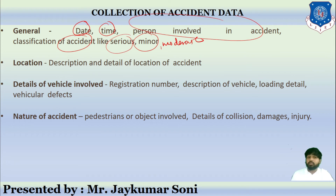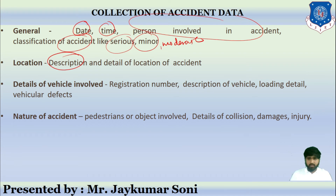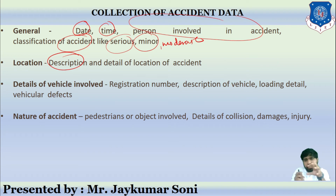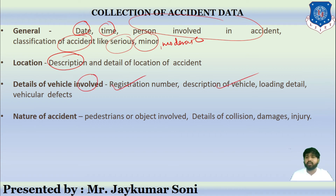We also collect location data such as description of the location, GPS coordinates, and details about the accident location including the total stretch and specific stretch where the accident took place. We collect details of vehicles involved such as registration number, description of vehicle, and loading details — whether the vehicle was heavily loaded or had any defects.